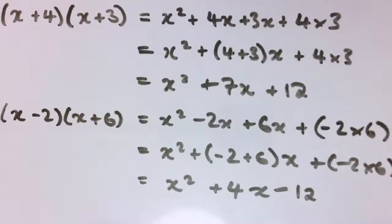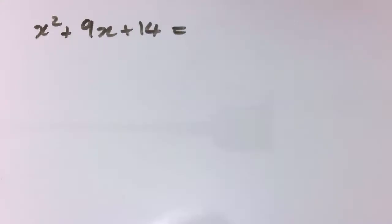So if I can find those numbers that's the key to doing this factorizing. So factorizing is just going the other way, so it's taking an expression that's already multiplied out and trying to put it back into brackets.